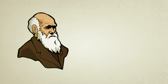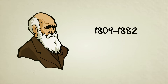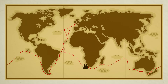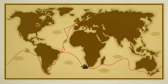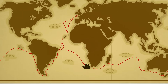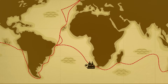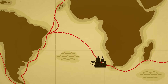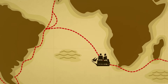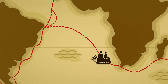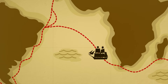Charles Darwin, who lived from 1809 to 1882, was a naturalist — someone who studies nature. At the start of his career, he traveled the world by ship, collecting and documenting plants and animals. During his travels, Darwin became very interested in the idea of common descent.